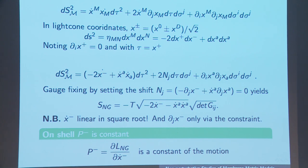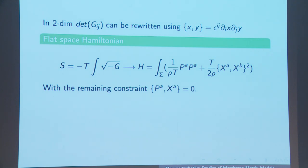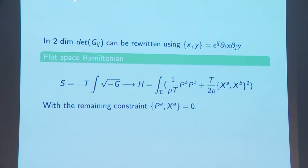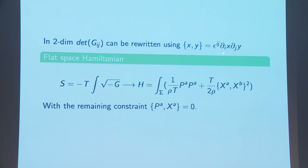Taking the momentum dL/dx-, one sees that on the equations of motion this is actually a constant, and the derivative with respect to dj of x- doesn't appear anywhere. In two dimensions, the additional special ingredient is that the determinant of the metric can be rewritten using two epsilon tensors; you can rearrange them so that you pull out something that looks like a Poisson bracket. The potential that's left takes this form, and one ends up with the flat-space Hamiltonian from the Nambu-Goto action with an additional Gauss law constraint.